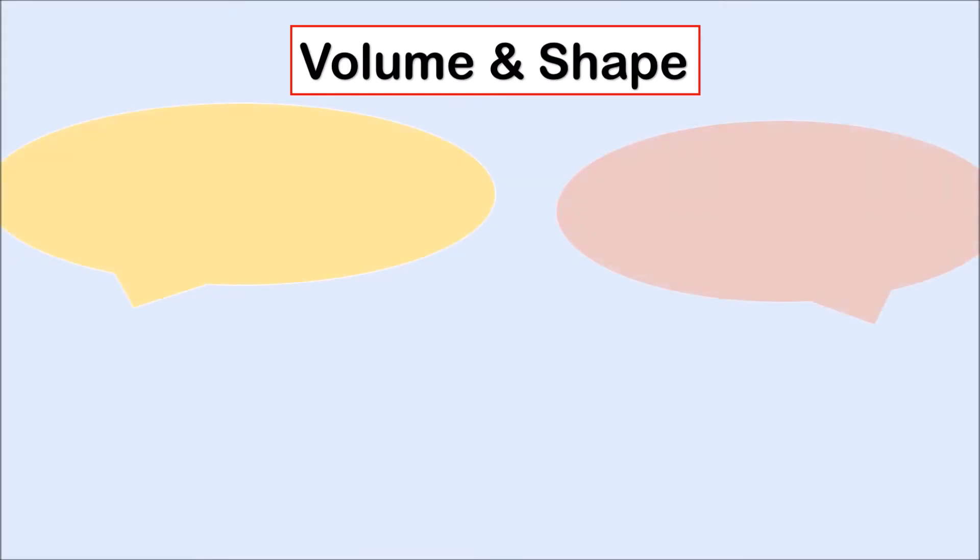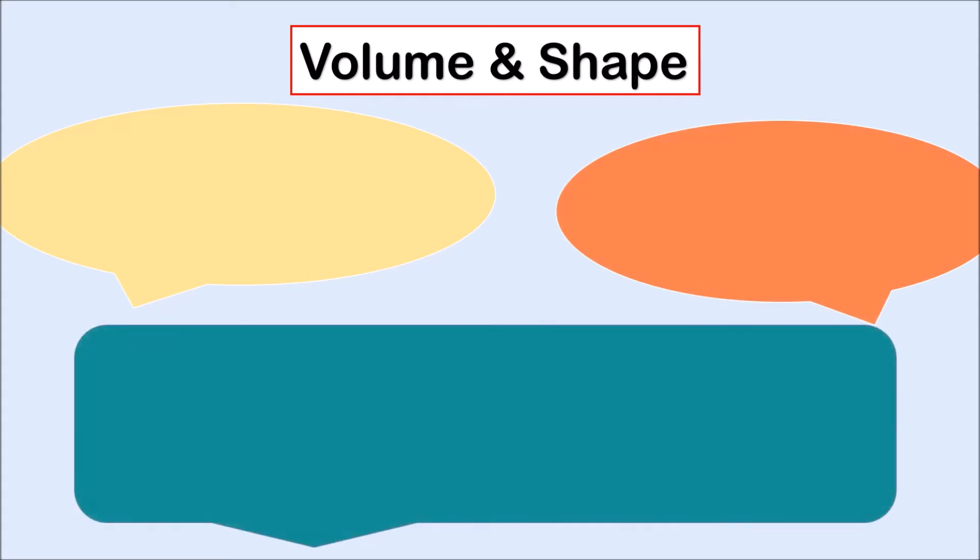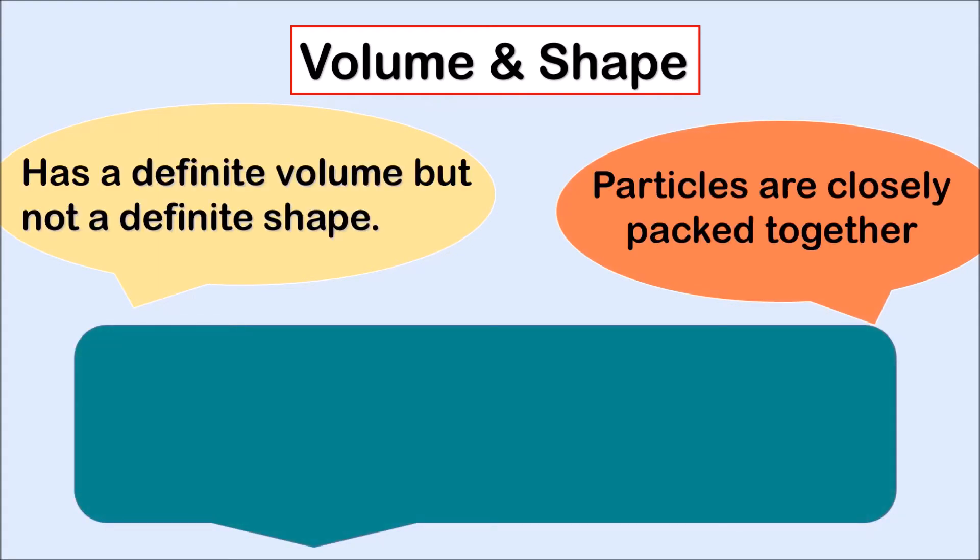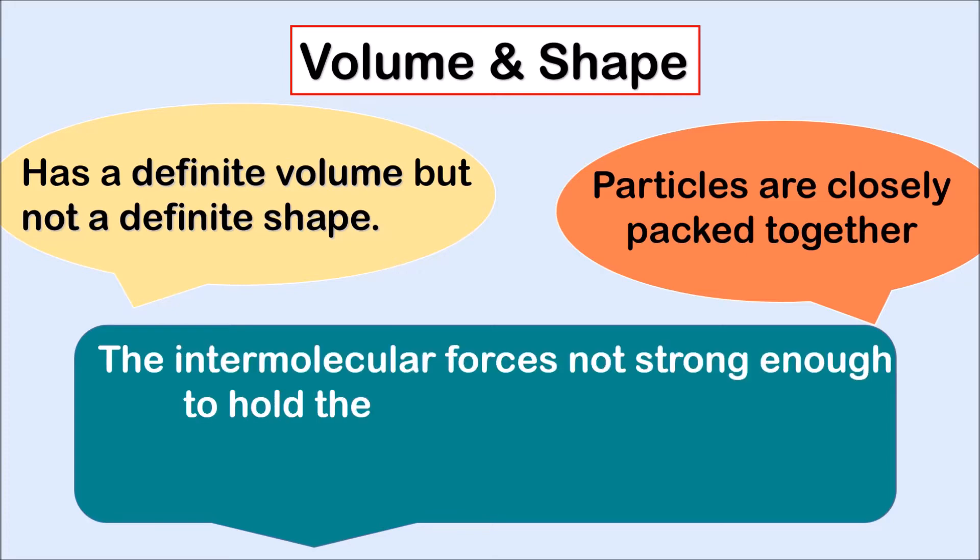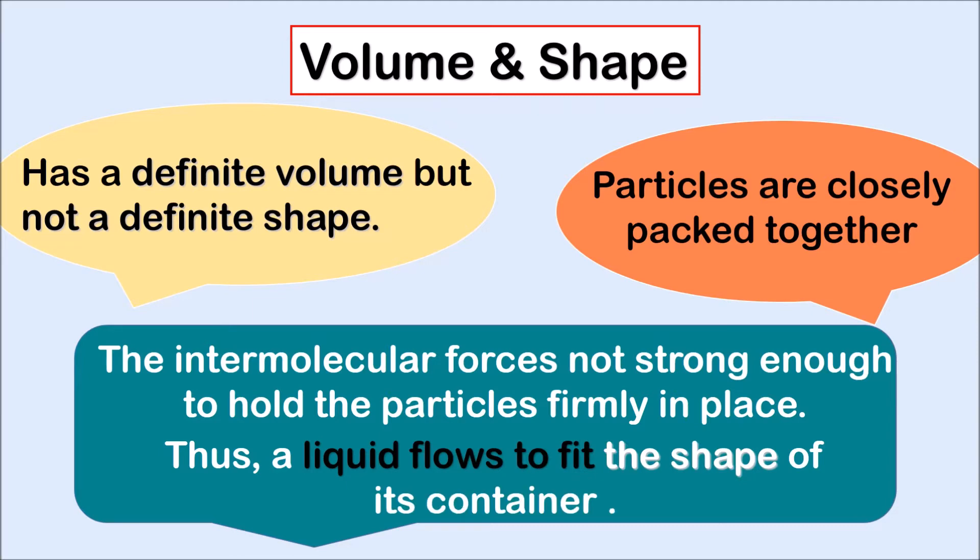First up, volume and shape. Liquid has a definite volume but not a definite shape. Particles are closely packed together. The intermolecular forces are not strong enough to hold the particles firmly in place, thus a liquid flows to fit the shape of its container.